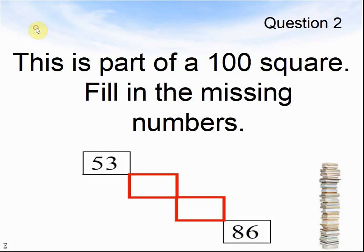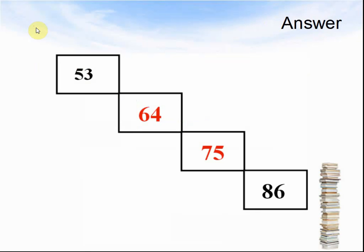Question 2. This is part of a hundred square. Fill in the missing numbers: 53, something, something, 86. What could the missing numbers be? Pause the video and solve the question. The answer: 53 plus 11 makes 64. 64 plus 11 makes 75. 75 plus 11 makes 86.